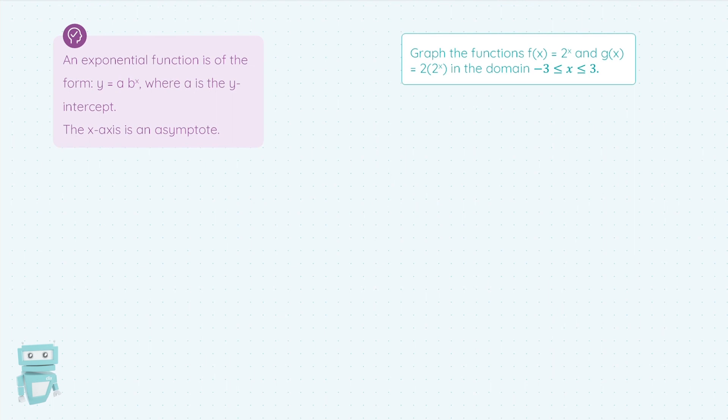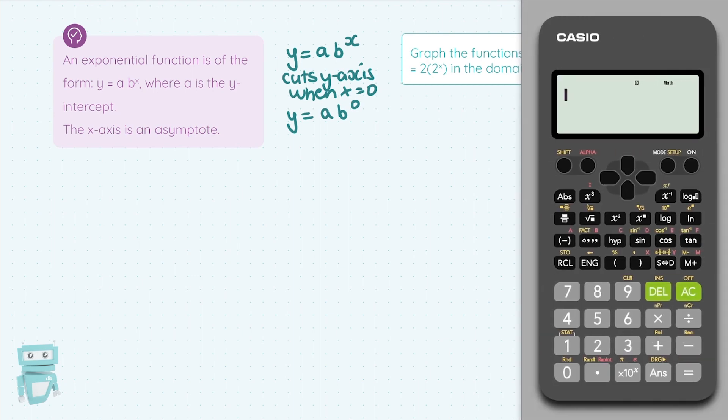Linking into that y equals a b to the x, a is known as the y-intercept. So think two functions, cuts the y-axis when x equals 0. So if I sub in 0 for my x, anything to the power of 0 is 1. If I put 5 to the power of 0 in my calculator I get 1. If I put 5,555,556 to the power of 0, I get 1. Anything to the power of 0 is 1.